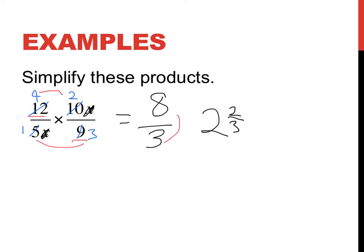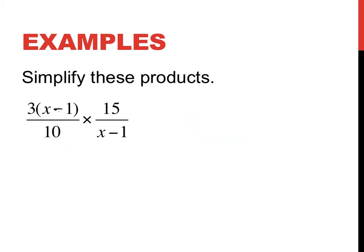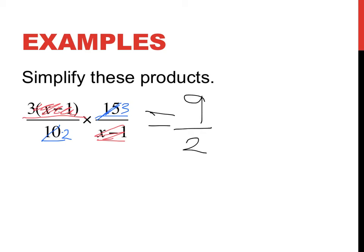Again, I'm asked to simplify these products, so I cross-simplify. The (x minus 1) in the numerator of one fraction simplifies with the (x minus 1) in the denominator of the other. Then for 10 and 15, the highest common number is 5: into 10 twice, and into 15 three times. Multiplying numerators and denominators: 3 times 3 is 9, and 2 times 1 is 2. So the answer is 9 over 2, or 4 and a half.